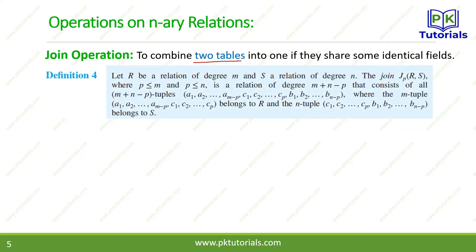The definition: let R be a relation of degree M, and S be a relation of degree N. The join J_P combines both relations R and S where P is less than M. The output relation has degree M + N − P, and consists of all (M + N − P)-tuples where the M-tuple belongs to R and the N-tuple belongs to S.